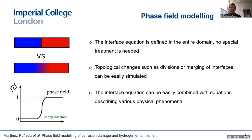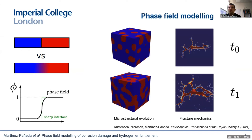A third benefit is that the interface equation can be easily combined with equations describing various physical phenomena, so it is very well suited for multiphysics problems. This paradigm goes all the way back to Van der Waals, who modeled a liquid-gas system by means of a density function that varies continuously at the liquid-gas interface. But only recently, with the help of computers, it has really taken off in numerous fields in science and engineering.